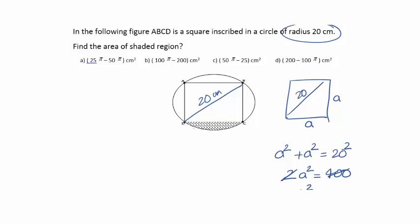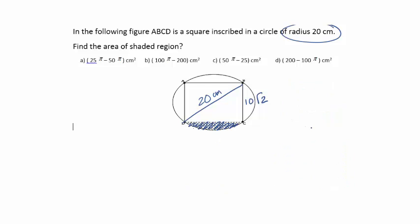That's 400. A squared is 200, so a is root 200 which makes the value 10 root 2. Here we have understood the side. In order to find out the area of the shaded region